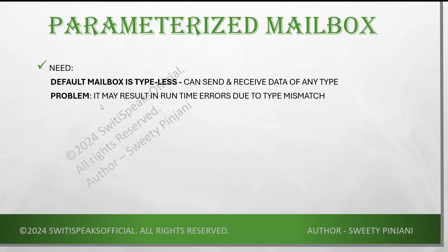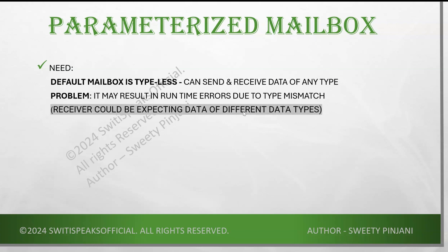Say in your sender or transmitter block you have created a mailbox which is generic — it means you are not restricting to any data type, it can send data of any type. However, you have a receiver which is trying to expect data of some different data type. At that time you will run into runtime errors due to type mismatch, because the transmitter will send data of any type but the receiver is expecting data of only a specific type. This is the problem with the default mailbox.